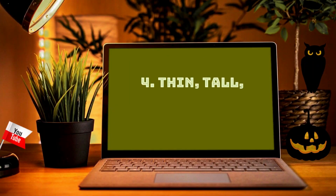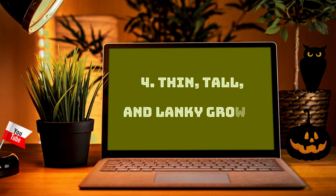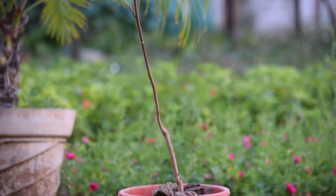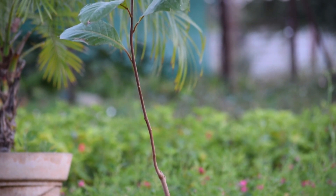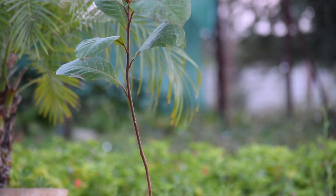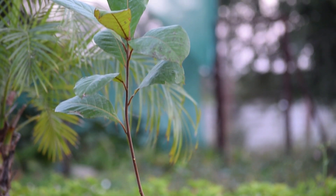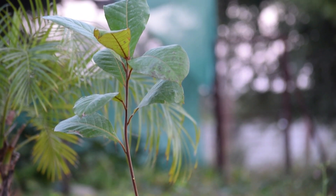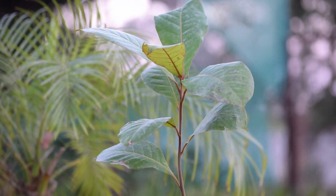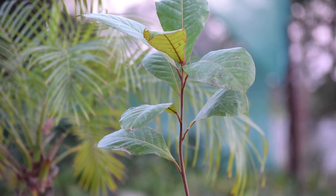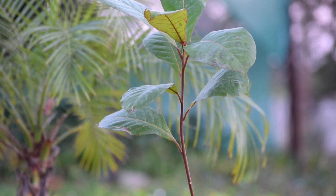Number four: thin, tall, and lanky growth. Plants having too much nitrogen will grow tall and spindly. Foliage shows lanky growth instead of a fuller appearance, with a wild growing pattern.